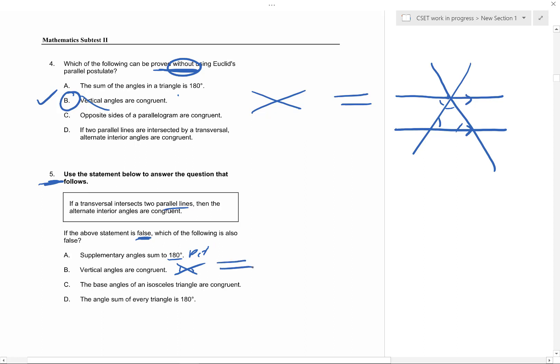Base angles of an isosceles triangle being congruent, there are no parallel lines in that, it has nothing to do with parallel lines, this guy's out. So even if you didn't know the proof comes from parallel lines, you could still say that the answer must be that the sum of every triangle is 180 degrees.